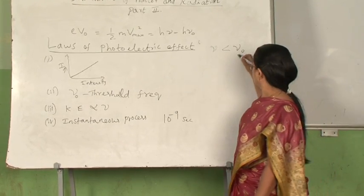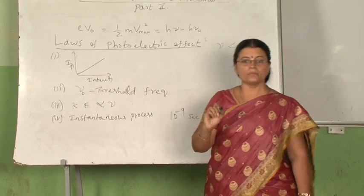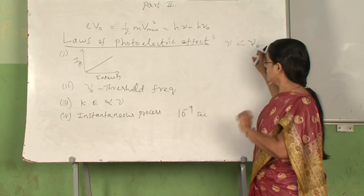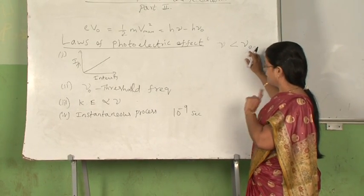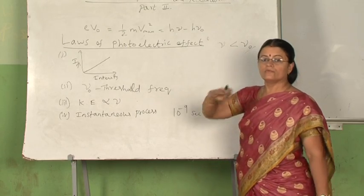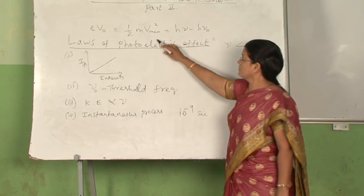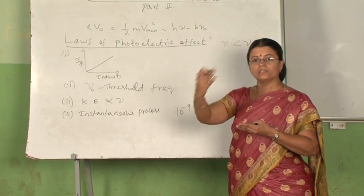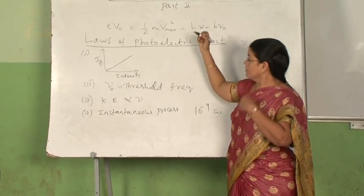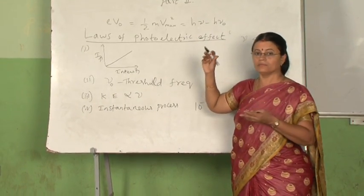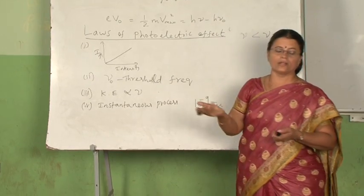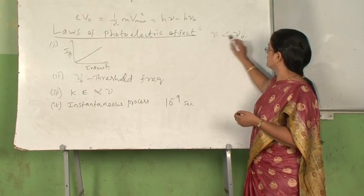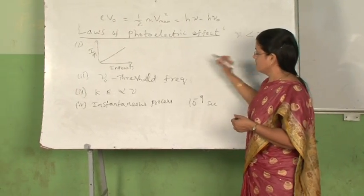That means the minimum frequency that the incident photon must possess is the threshold frequency. Below this, photoelectric emission cannot take place. The term half mV²max is the kinetic energy possessed by electrons coming out of the metal surface. Since photoelectrons cannot possess negative kinetic energy, no photoelectric effect can take place if the incident photon has a frequency less than the threshold frequency. This explains the second law.